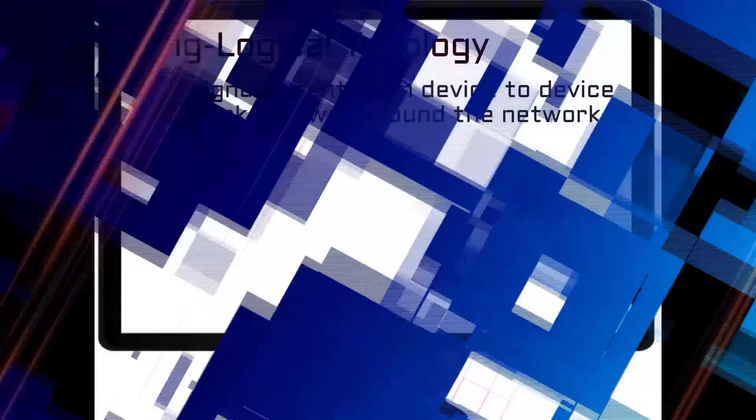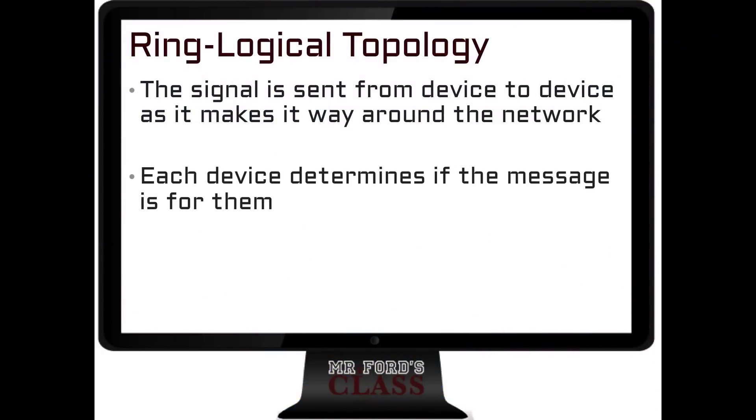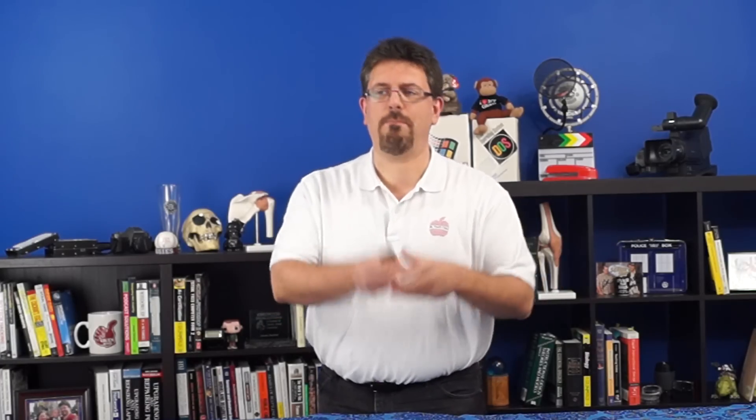Just like we talked about with the bus topology, the bus topology is not just a physical topology — it's also a logical topology. The other type of logical topology is the ring logical topology. The signal is sent from device to device as it makes its way around the network. Each device determines if the message is for them — so every device gets that data packet, checks if it's for them, keeps it if so, or passes it along if not.